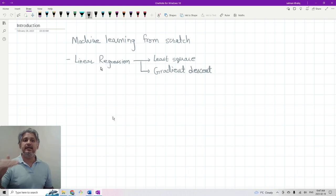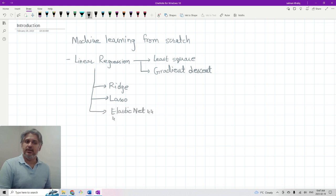Gradient descent has multiple variations or different versions of it. We will start with linear regression and different flavors of linear regression. For example like we will talk about ridge regression, lasso regression, and elastic net regression.